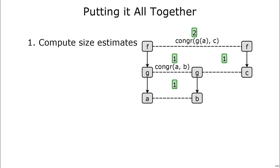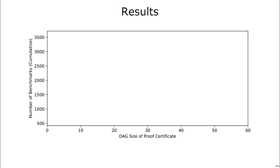So putting it all together, we first compute the size estimates for all of these edges. Then we find a shortest path through the graph and output that extracted proof. Using this algorithm, we were able to beat the state of the art in proof extraction from congruence closure.